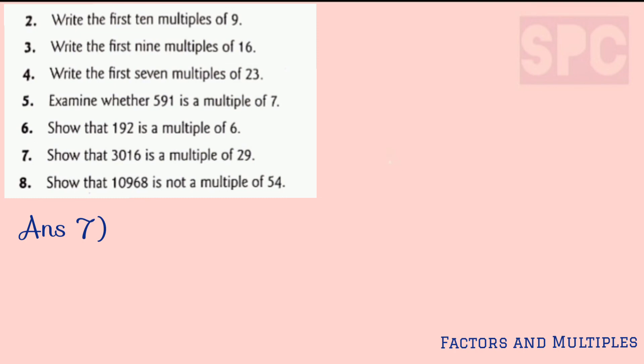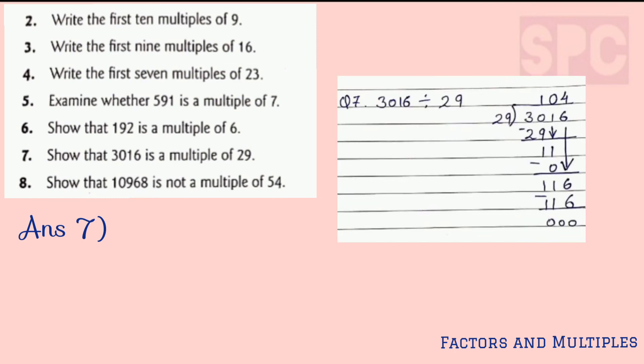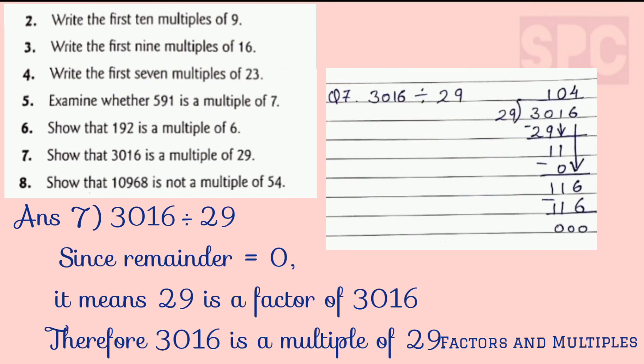Question number 6: show that 3016 is a multiple of 29. We divide 3016 by 29, and since after dividing we get 0 in the remainder, it means 29 is a factor of 3016 and 3016 is a multiple of 29.